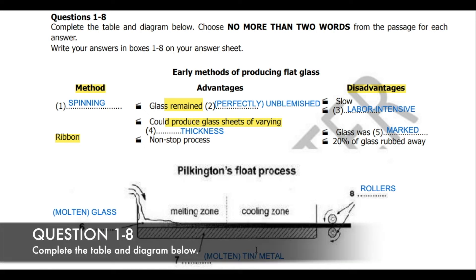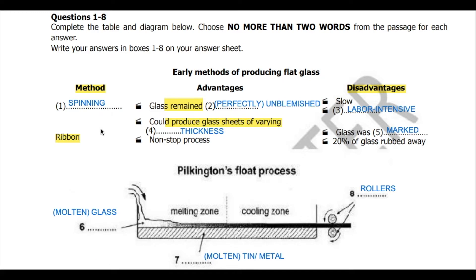Question 128: complete the table and diagram below about early methods of producing flat glass. The second method given is ribbon, and the first is spinning.